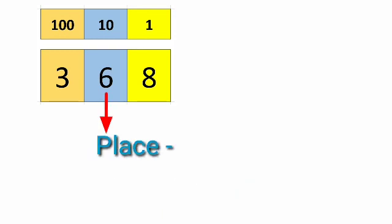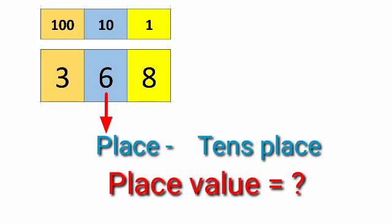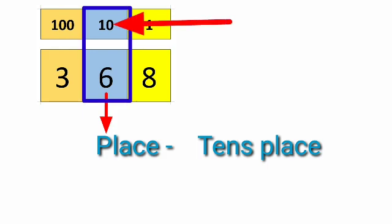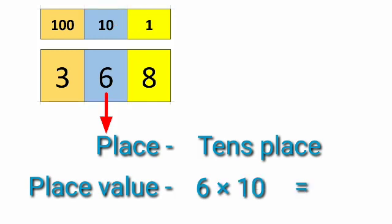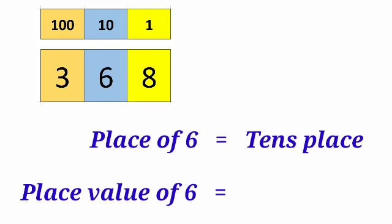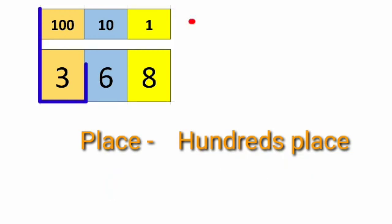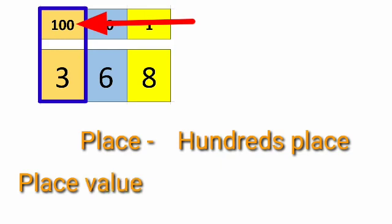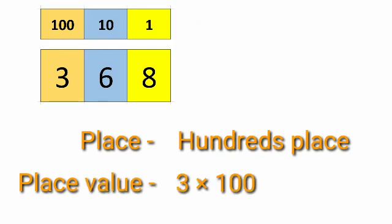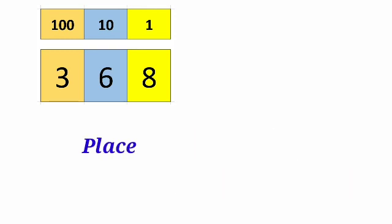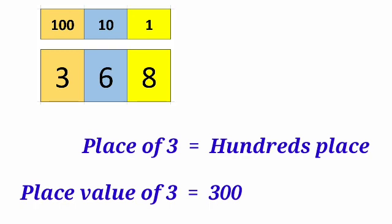In the number 368, the place of six is ten's place. The place value of six equals six into ten. Six tens are sixty. Therefore, place value of six is 60. The place of three is hundred's place. The place value of three equals three into hundred. Three hundreds are three hundred. So place value of three is 300.